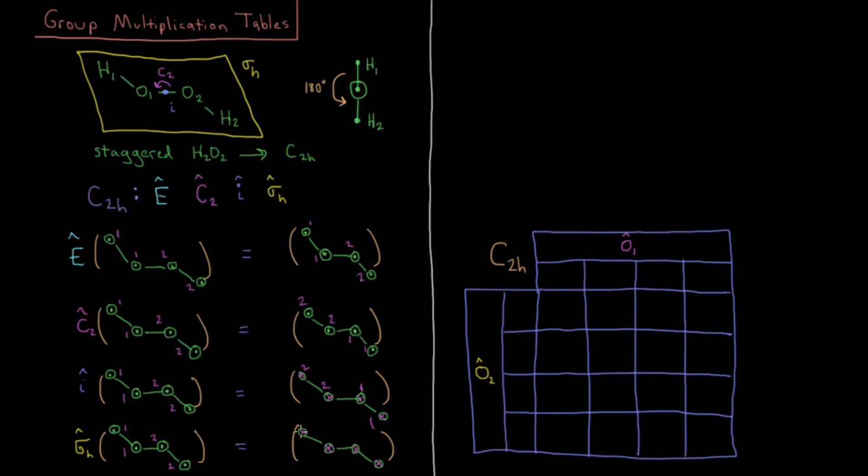And sigma H, all of them stay in the same relative position, but now they're pointing into the board instead of pointing out of the board. Sigma H, they're all in the molecular plane. Now their arrows point down instead of pointing up. And that's mainly all for labeling purposes so that we can see the following of what we're about to do.